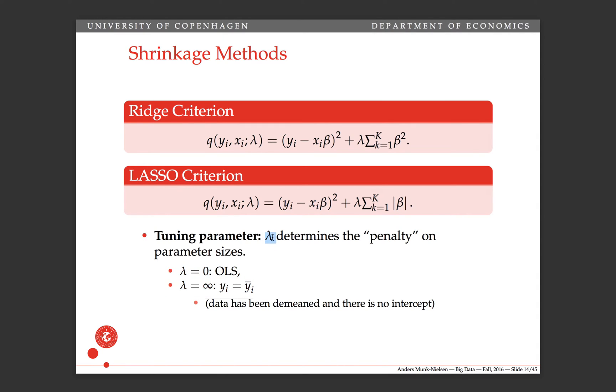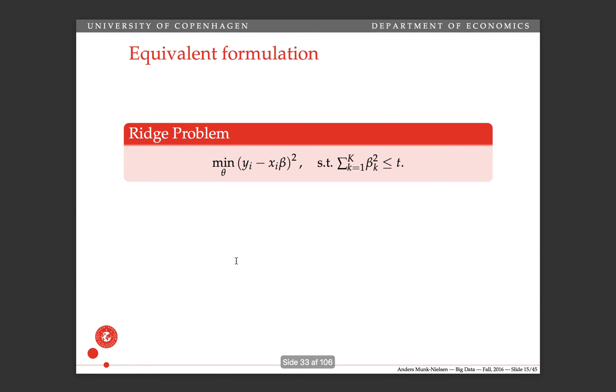This lambda parameter is not going to be identified directly from the data, because the lower you set lambda, if you set it to zero, you maximize the in-sample fit. And that's just going to get better the closer lambda gets to zero. So we're going to have to use cross-validation to avoid having this problem of overfitting in-sample.